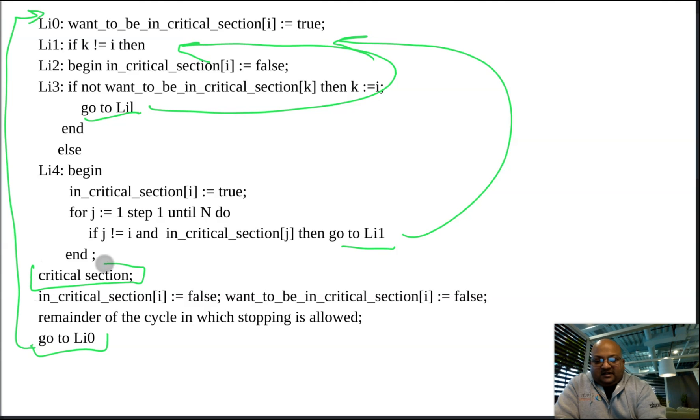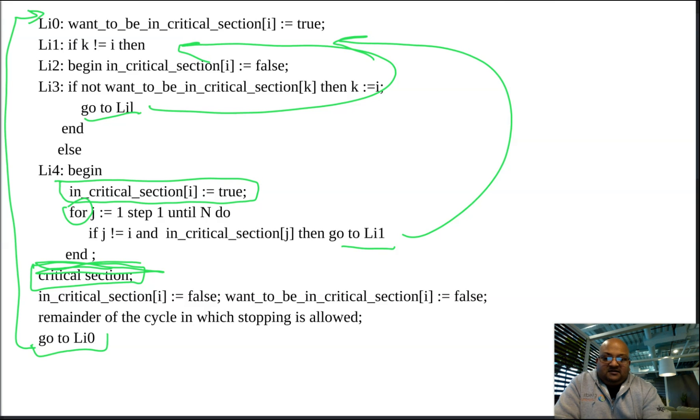First, let's try to convince ourselves that the critical section is indeed mutually exclusive. You can see that the only way you'll get into this critical section is if in critical section of I is true. And then in this loop, we're checking that everyone else's in critical section is false. Because if it is true, then we go all the way to the beginning. So if anyone else is in their critical section, we go and jump to the beginning.